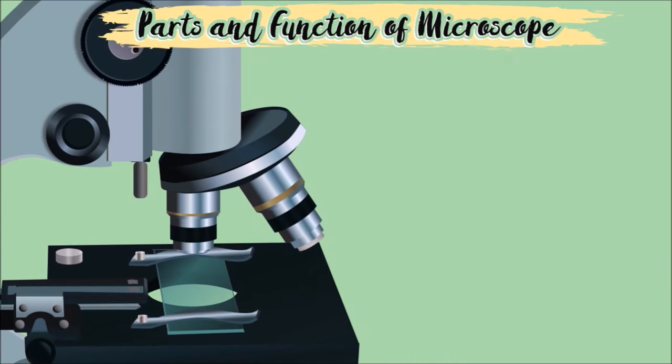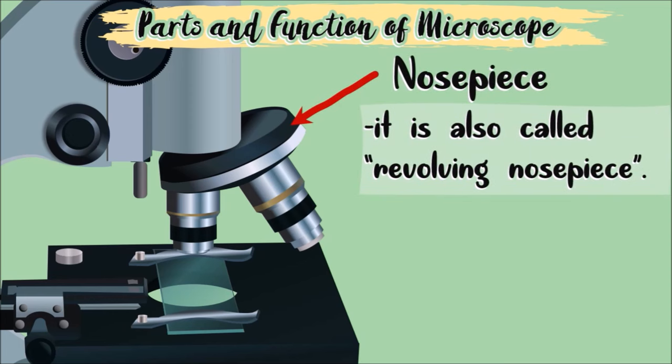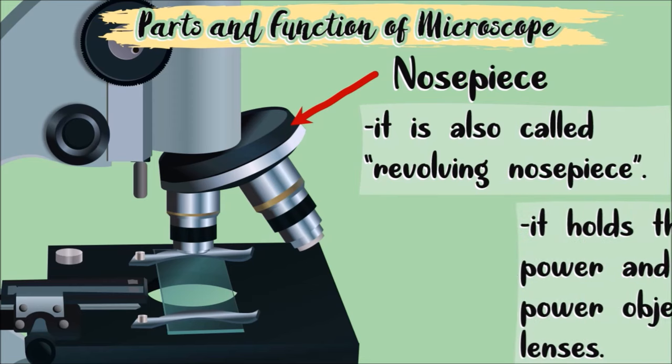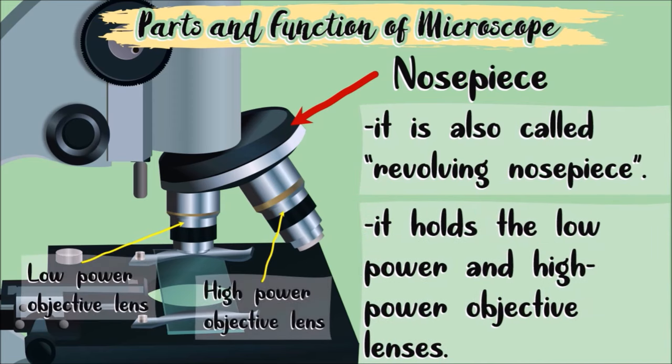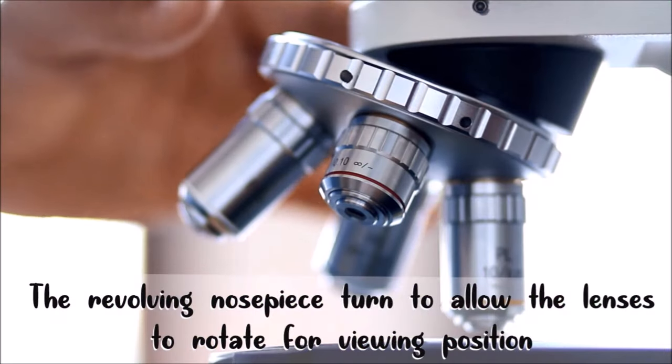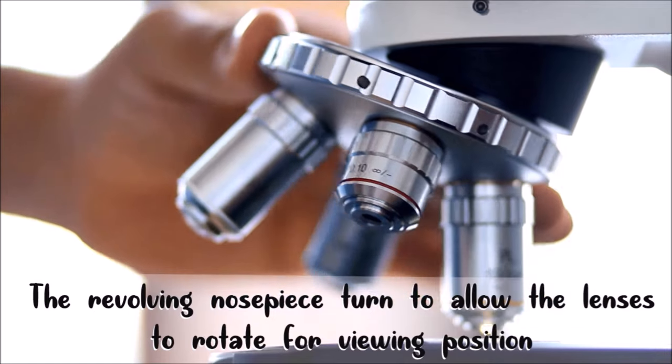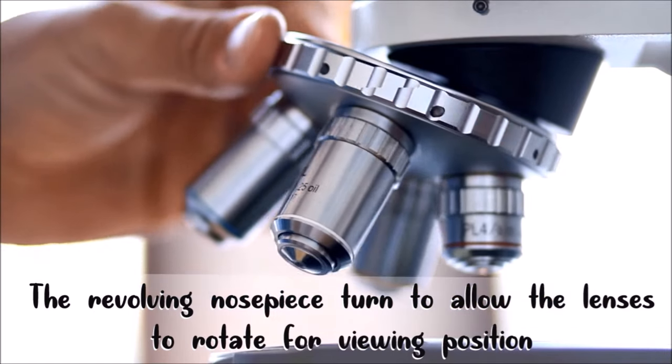Next is this part. This is the nose piece, or also called revolving nose piece. It holds the low power and high power objective lenses. It also turns to allow the lenses to rotate for viewing position.